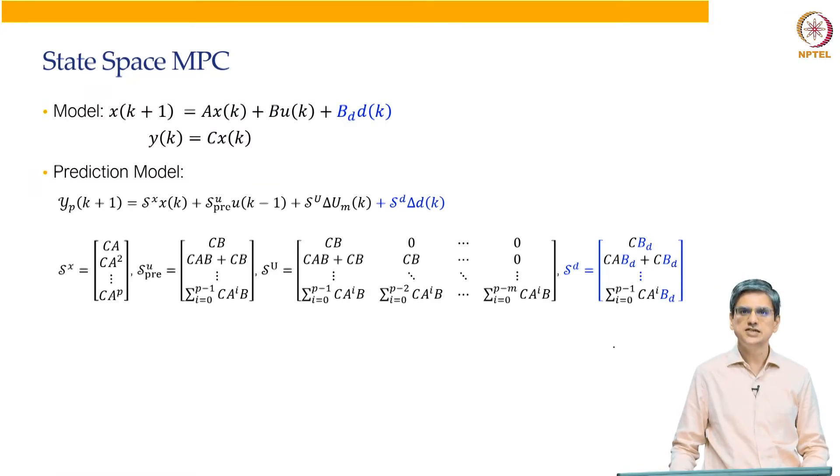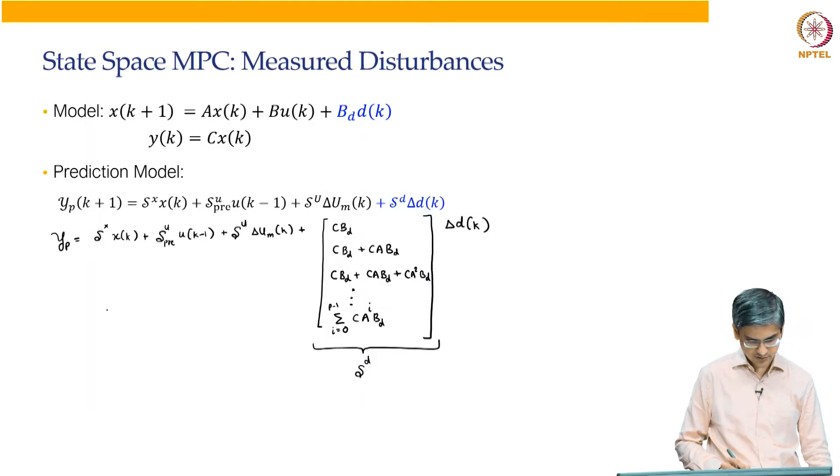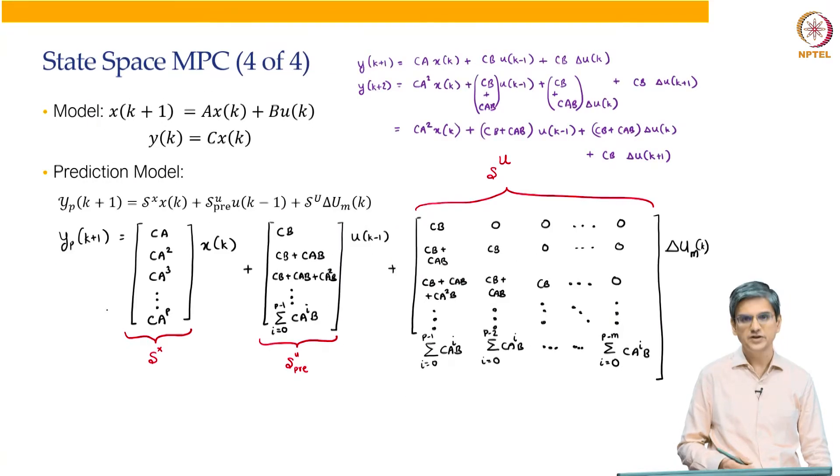So, what you have just seen, I am presenting that now in a more formal way. Our prediction equation, yp is going to be Sx multiplied by x where Sx is given over here which is same as what we had done earlier.